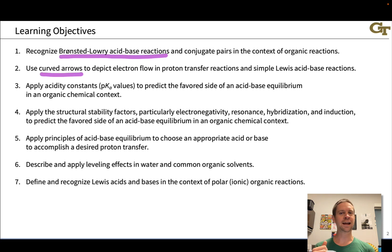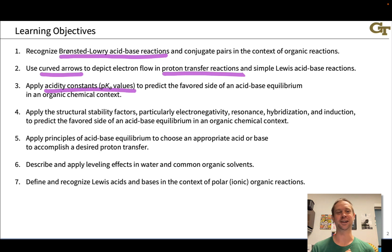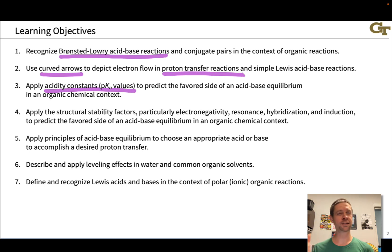We're going to return to the idea of Ka, the equilibrium constant for acid dissociation, and pKa, which is more commonly used in an organic context because it's a more human-friendly number. Organic chemists abhor numbers and despise exponents, which is why we use pKa. And we're going to learn how to apply acidity constants to make predictions about acid-base reactions in a quantitative sense.